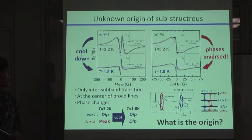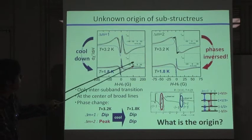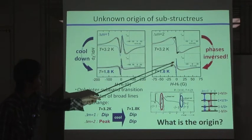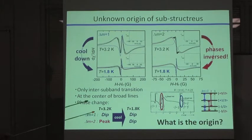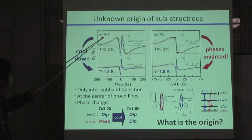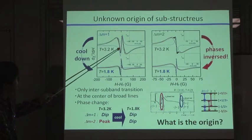Here you can see several features of these signals. First, in all spectra, you can see fine structures at the center of the broad line like this. And you may notice that the phase of the fine structure, in case of the M1 inter-subband transition, by decreasing the temperature, the phase of the substructure doesn't change.